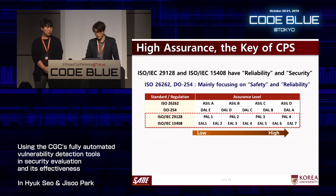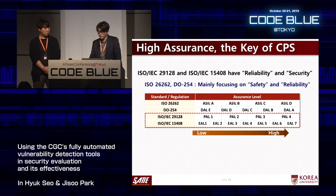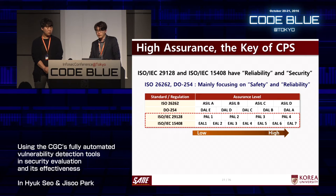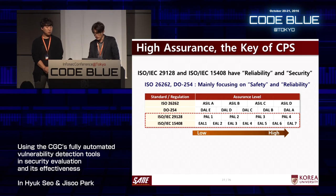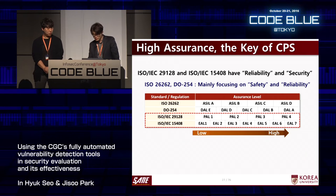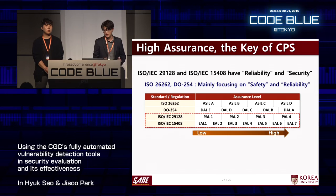Let's look at this more concretely. ISO/IEC 29128 covers verification of cryptographic protocols, and ISO/IEC 15408 covers evaluation criteria for IT security — both focus on reliability and security. On the other hand, ISO 26262 covers road vehicle functional safety, and DO-254 covers design assurance guidance for airborne hardware — these mainly focus on safety and reliability.